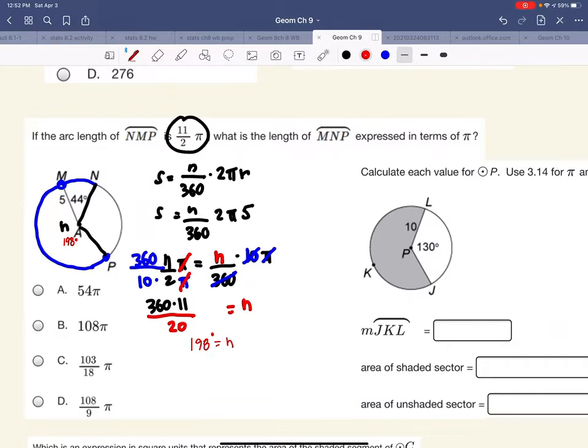So if this is 198 degrees, would this help us figure out our final answer? So going back up here, it looks like we could find out the rest of this angle. If I do 360 take away 198, this tells us this would be 162. So this is 162 degrees. So they're asking, what is the length of M in P? What is the length of this expressed in terms of pi? So they want this arc length.